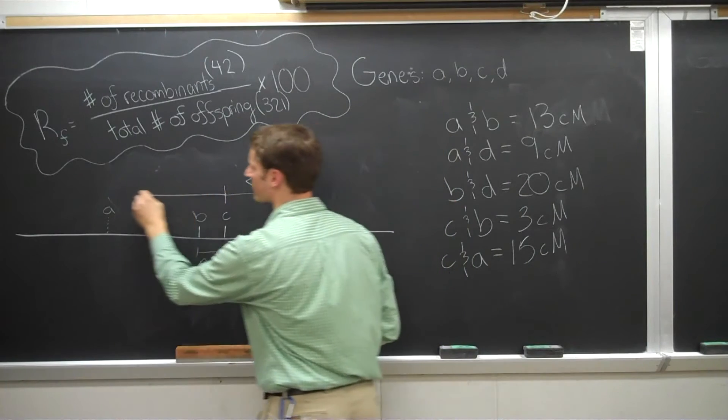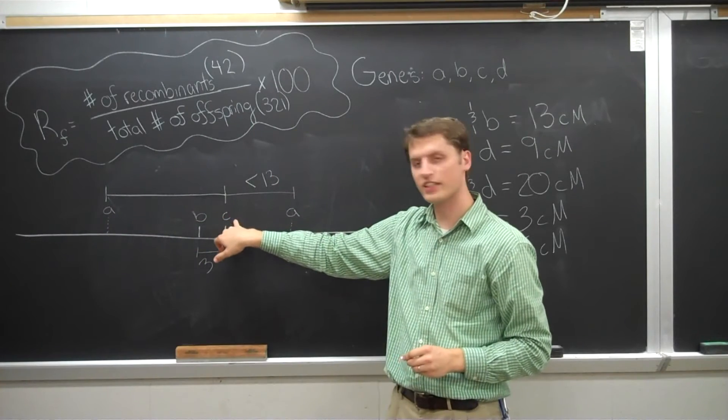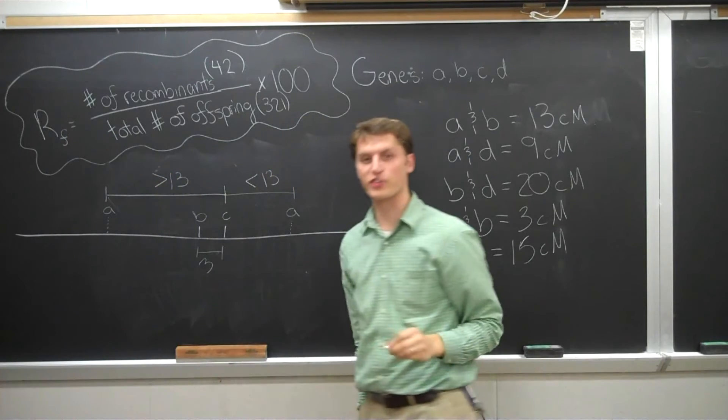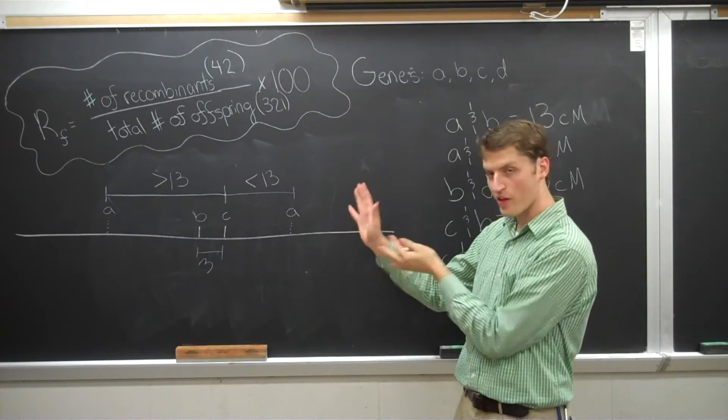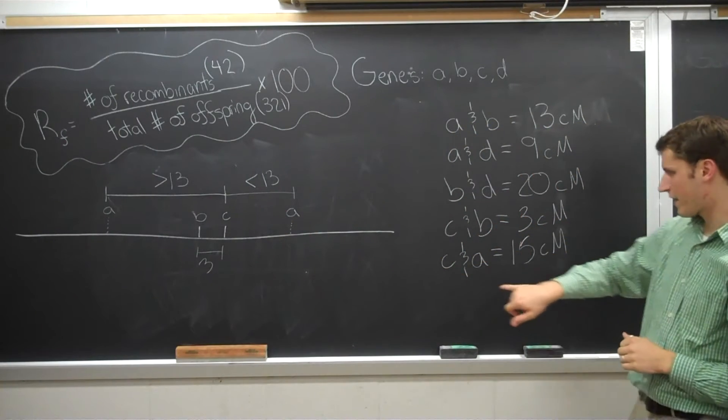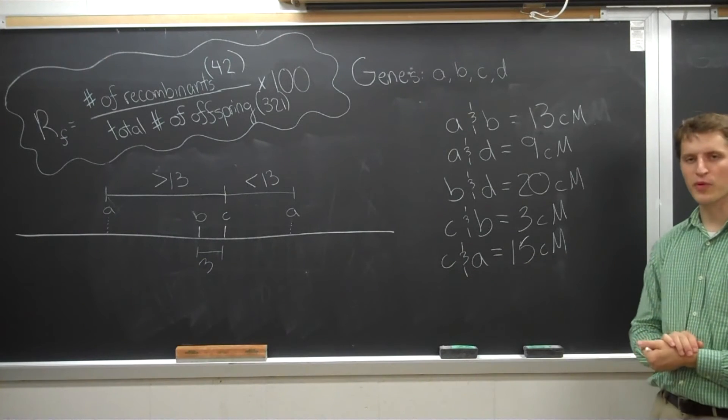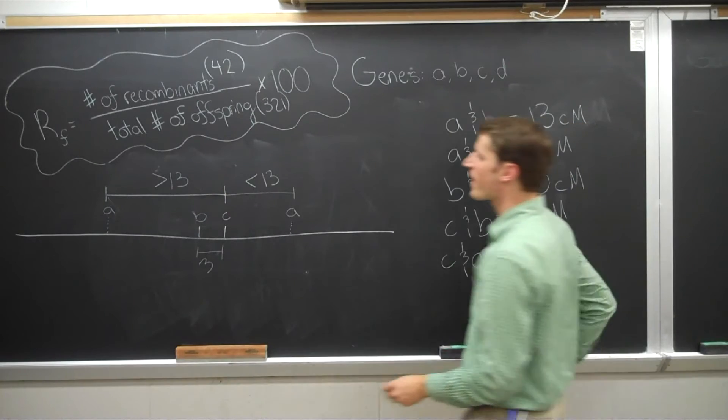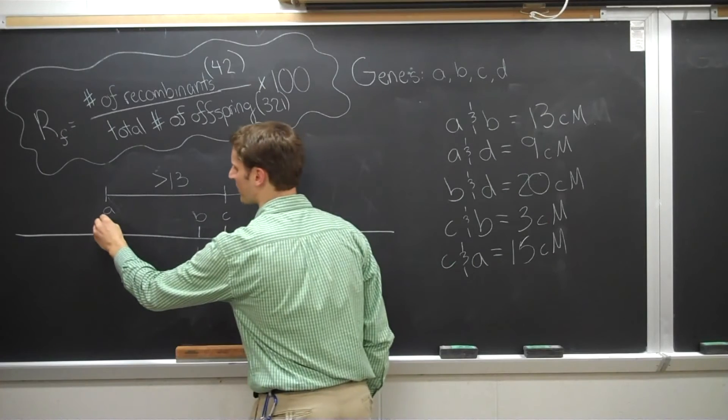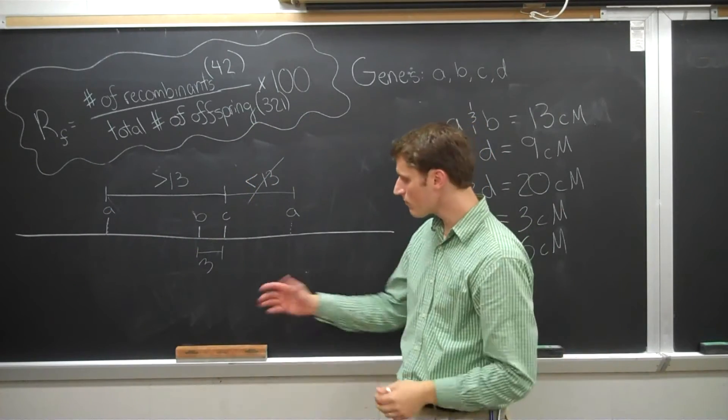Contrarywise, over here, if it's over here, the distance from A to C would be greater than 13. So that's our hypothetical situation. Now, immediately, when you look over here, here's C and A. The distance between them is 15 centimorgans. So that rules out this guy right there. And it means A must be located on the opposite side of B. It's the only choice.